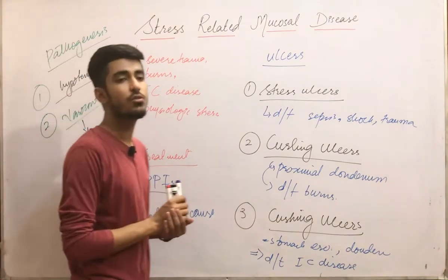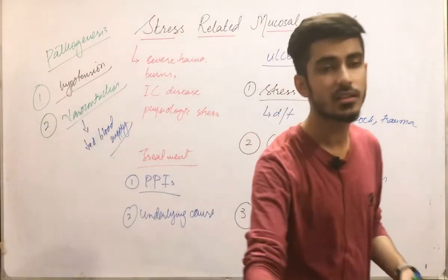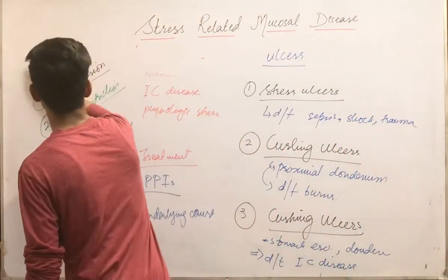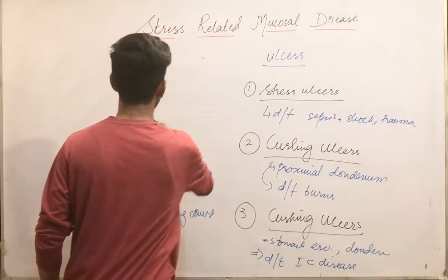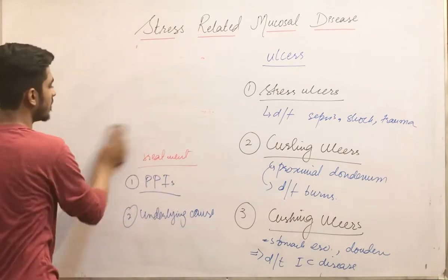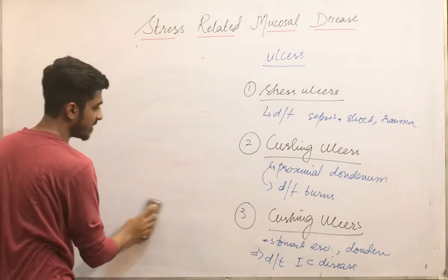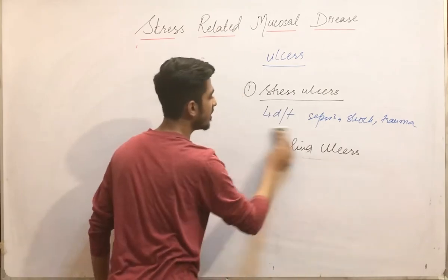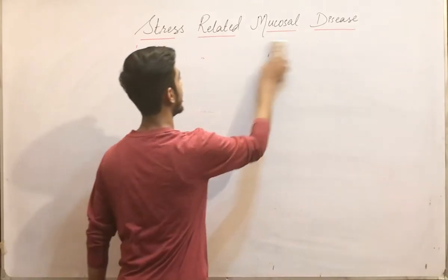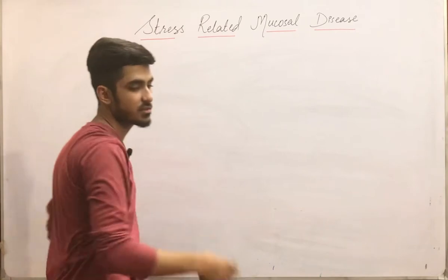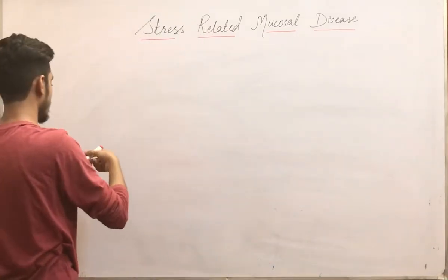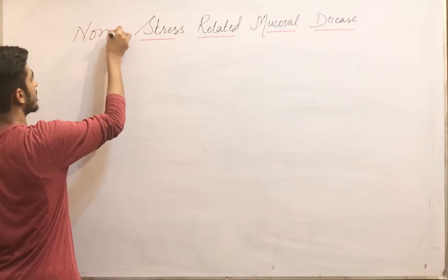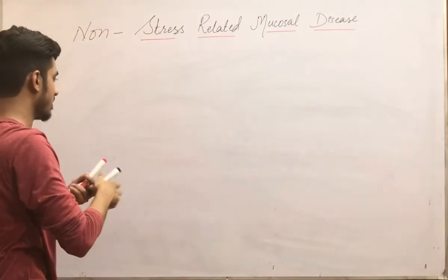Now we are moving on towards the non-stress-related diseases. There are two diseases we will be studying one by one. These non-stress-related diseases lead to bleeding in the stomach — gastric bleeding.